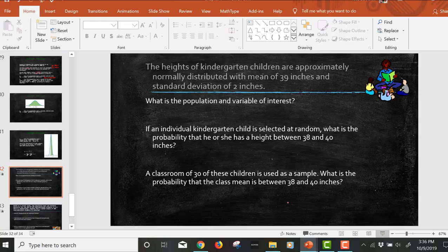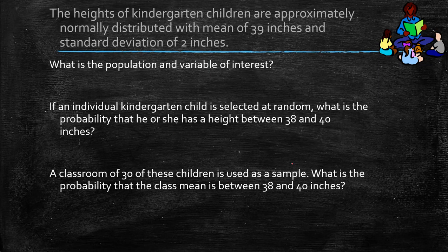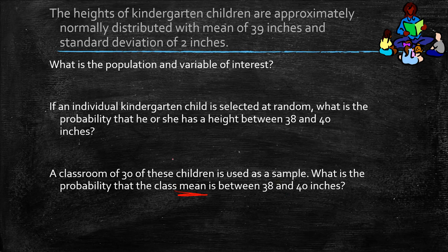So now what if we have a classroom of 30 of those children? And we want to know the probability that the class mean is between 38 and 40. So we have 32 kids and we want to know if their average weight is between 38 and 40. So now, again, we've got to figure out mu of x bar and sigma of x bar because we're trying to find the probability of x bar being between 38 and 40. So that's going to be your key word you're looking for. Anytime you see the probability of the mean, you've got to find this. All right, so remember, we have to have a normal distribution or a sample size greater than 30. Notice we have both. We have a normal distribution and 30 kids.